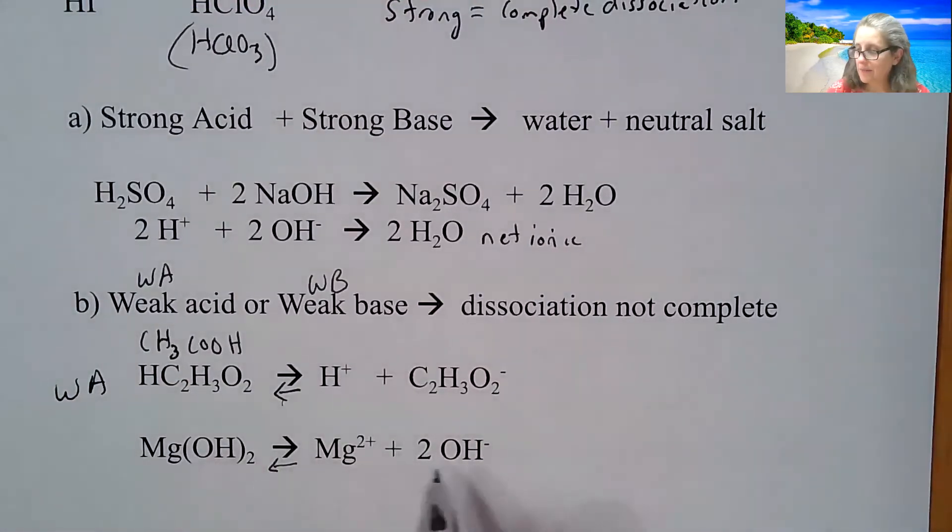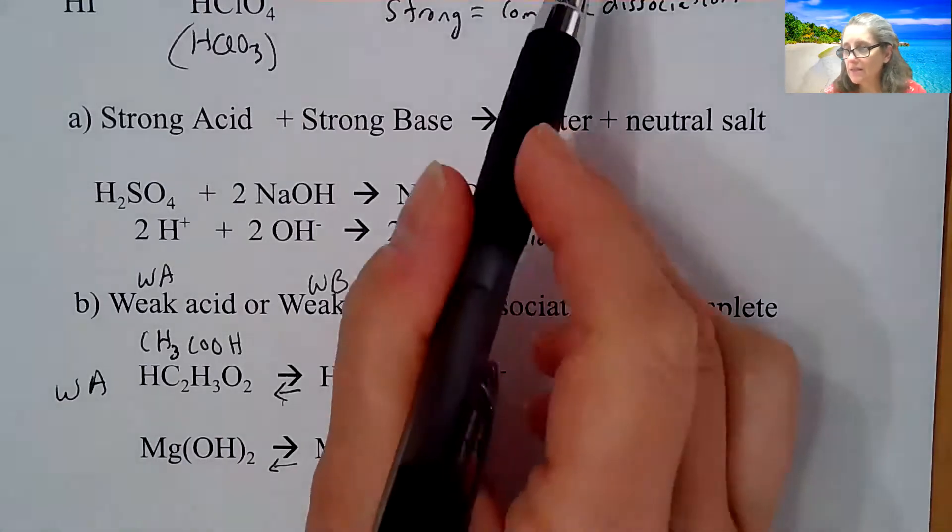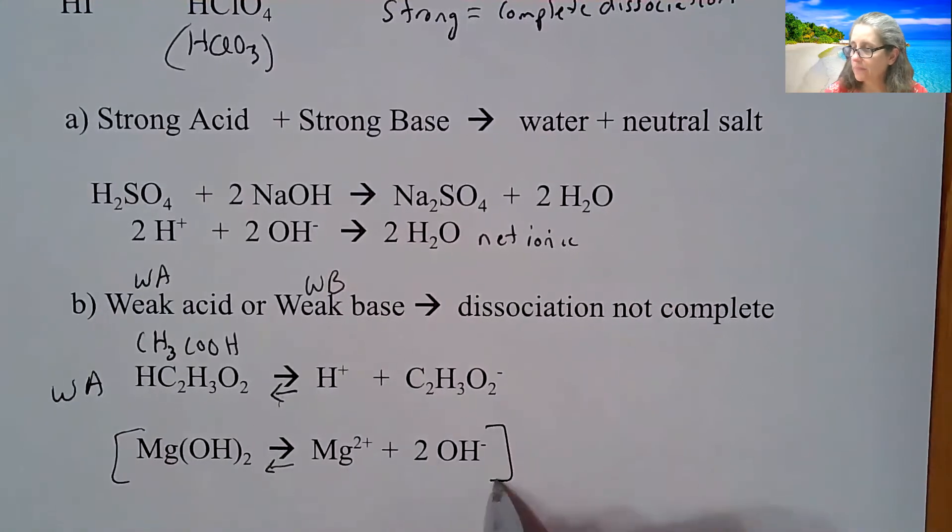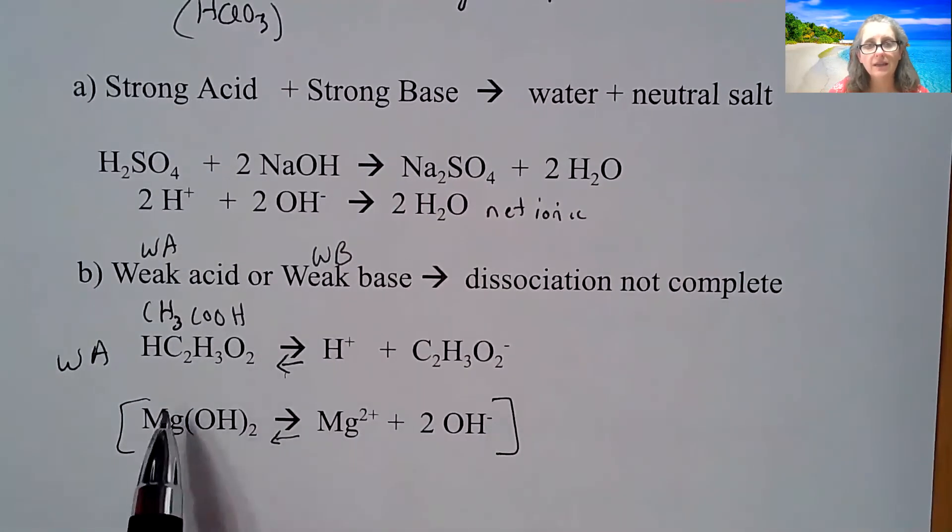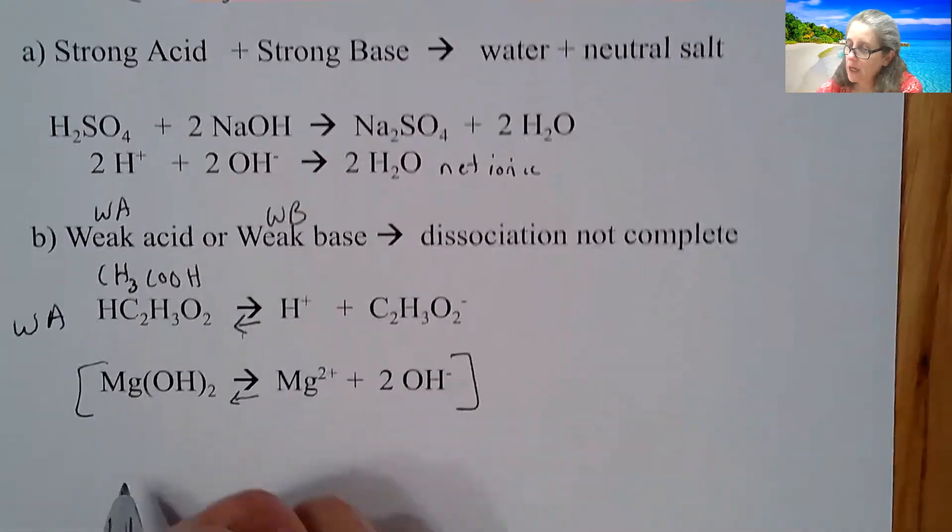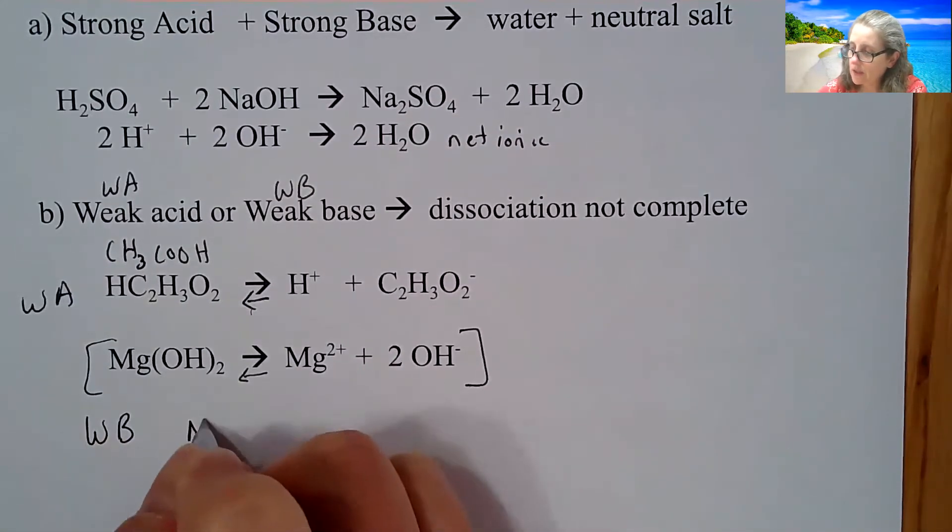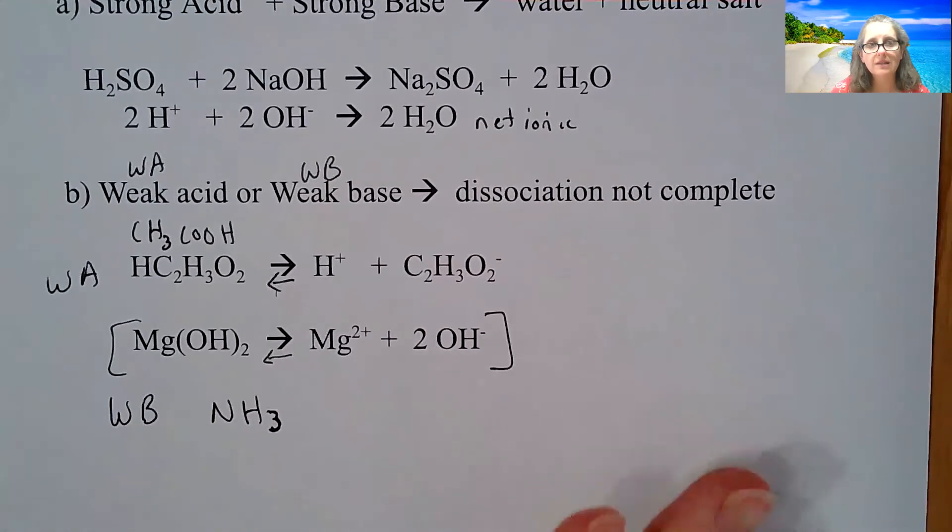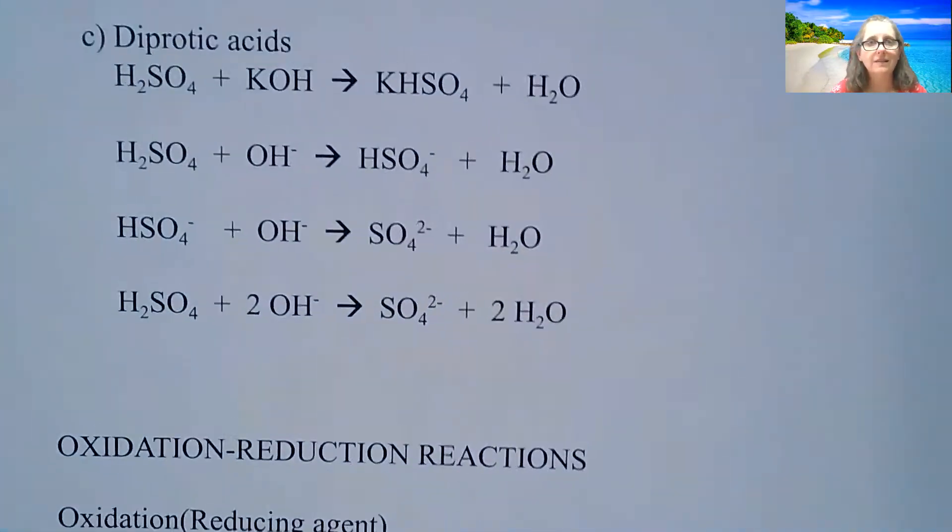Now magnesium hydroxide is considered more of a strong base, but it does have some issues. Some say that it's only partially dissociates because of the precipitation reaction that's taking place. A weak base is going to be ammonia. Ammonia is the most classic weak base that we talk about. And again, this will all be covered a little bit more thoroughly second semester.